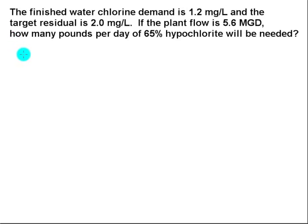The finished water chlorine demand is 1.2 milligrams per liter and the target residual is 2 milligrams per liter. If the plant flow is 5.6 million gallons per day, how many pounds per day of 65% hypochlorite will be needed?